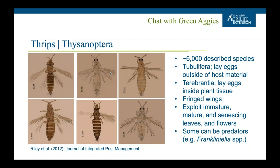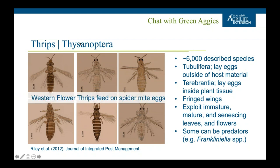Interestingly, Western flower thrips feed on spider mite eggs. So if you have a small population of thrips and a small population of spider mites and you treat for thrips, you could inadvertently increase your spider mite population depending on what you applied. If you're spraying for thrips and frequently see a spider mite population explosion afterward, keep an eye out for that pattern. Consider using other methods like preventing thrips from getting in, or follow up with spider mite applications — have a secondary management plan ready.